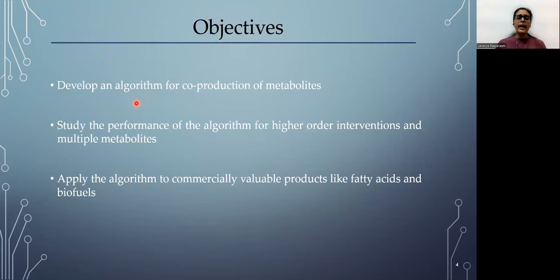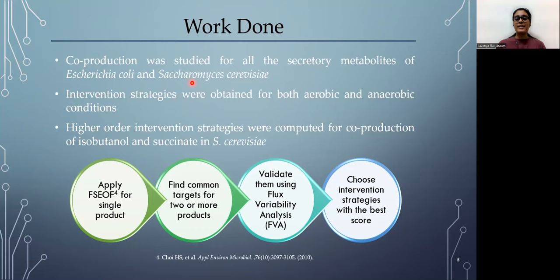So our aim was to develop an algorithm for co-production of metabolites and study the performance of this algorithm for higher order intervention strategies and multiple metabolites and apply the algorithm to commercially valuable products like fatty acids and biofuels. So we have worked with Escherichia coli and Saccharomyces cerevisiae models and we have identified high intervention strategies in both aerobic and anaerobic conditions. And we have obtained higher order intervention strategies for co-producing isobutanol and succinate in S. cerevisiae.